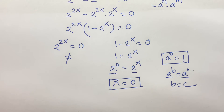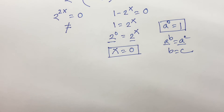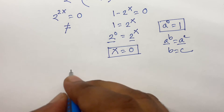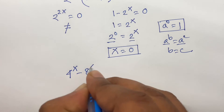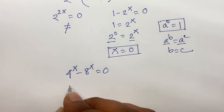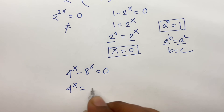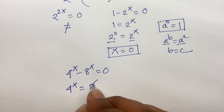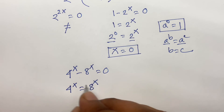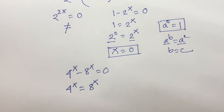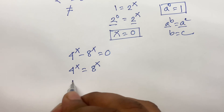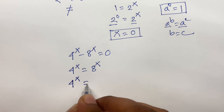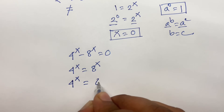This is our final answer. Then, I solve this question by an alternate method. Our question is 4 power x minus 8 power x is equal to 0. Here is 4 power x equals 8 power x — I move 8 power x to the right side, so we find it positive. So, 4 power x is equal to 8 power x.